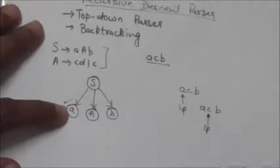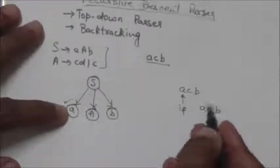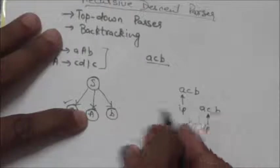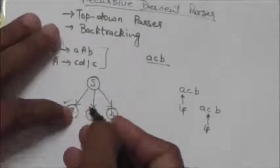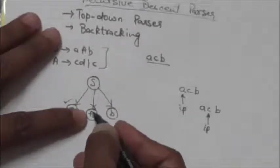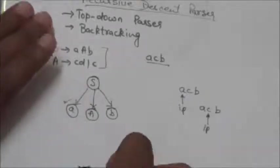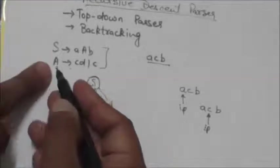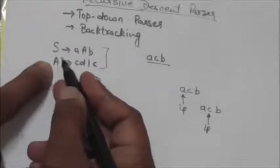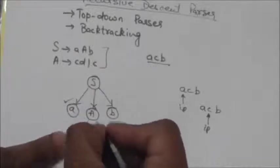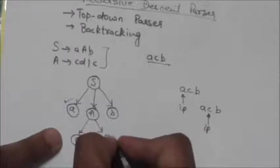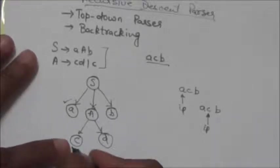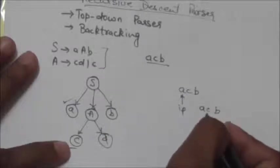The input pointer now points to terminal 'c', but the next leaf in the tree is non-terminal A, not terminal 'c' — so there is a mismatch. We need to expand the tree, so we apply the production rule A → cd. The symbols c and d become children of node A.